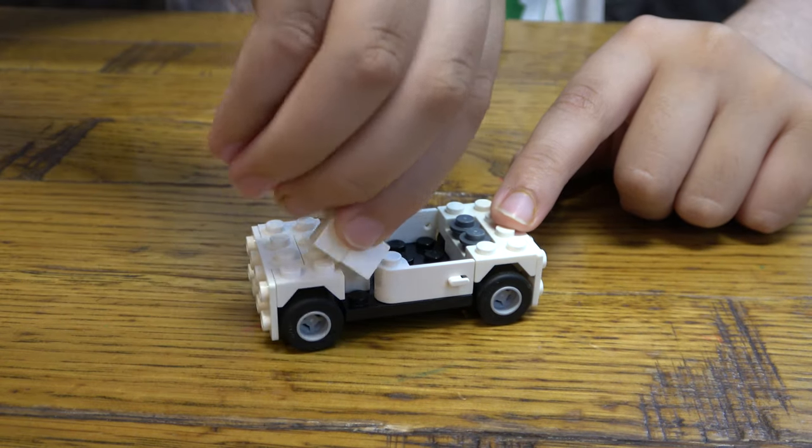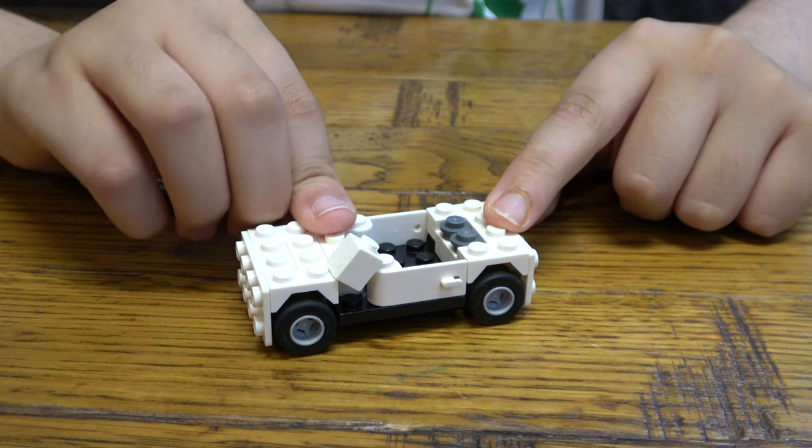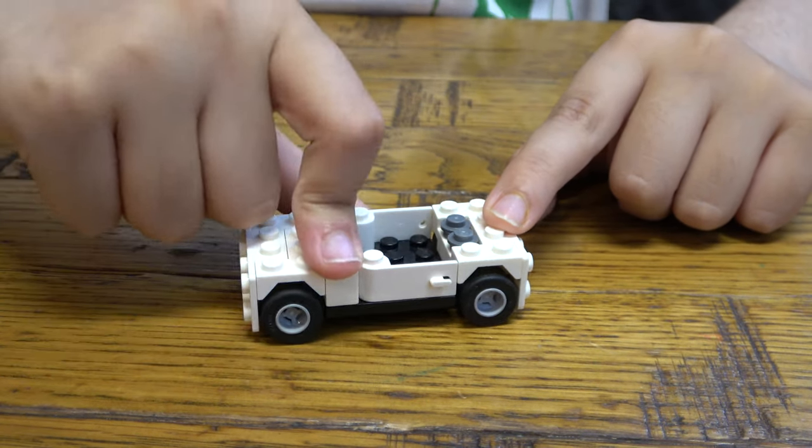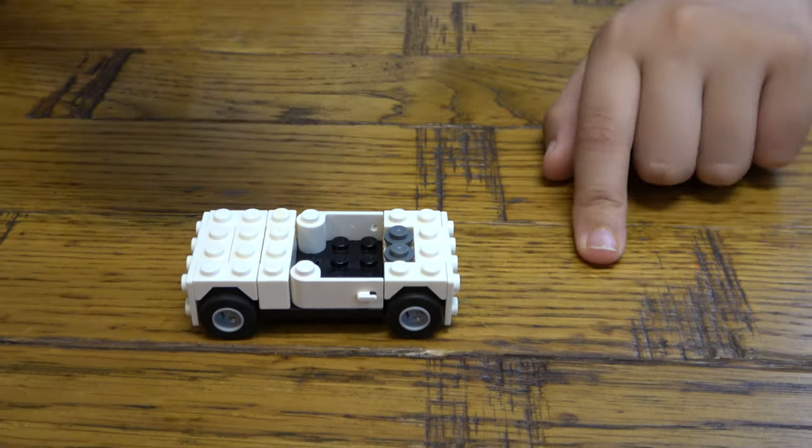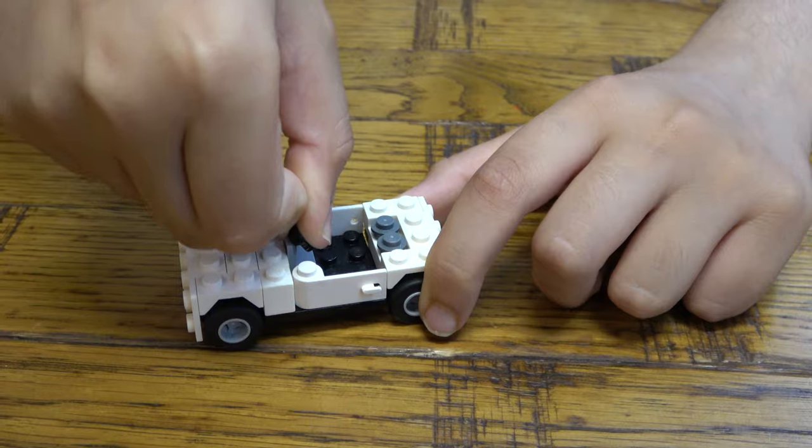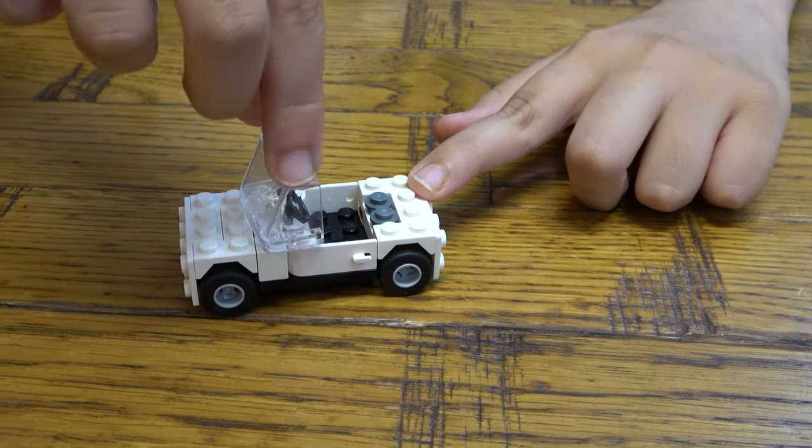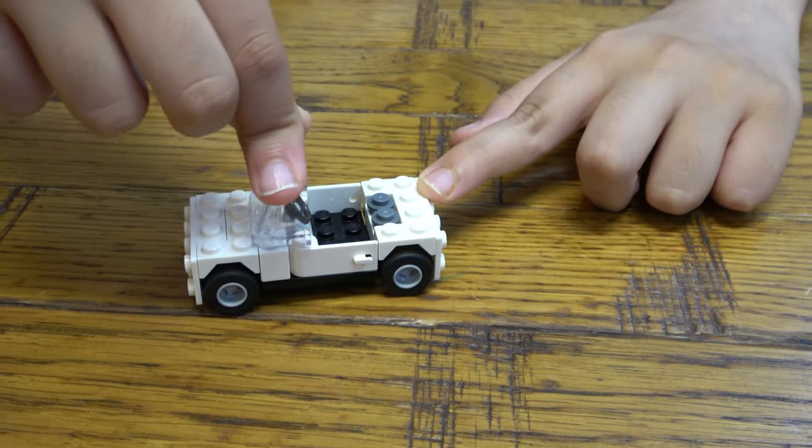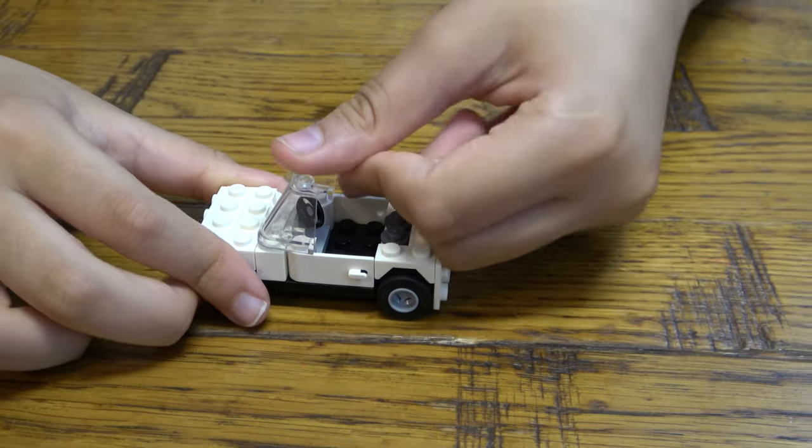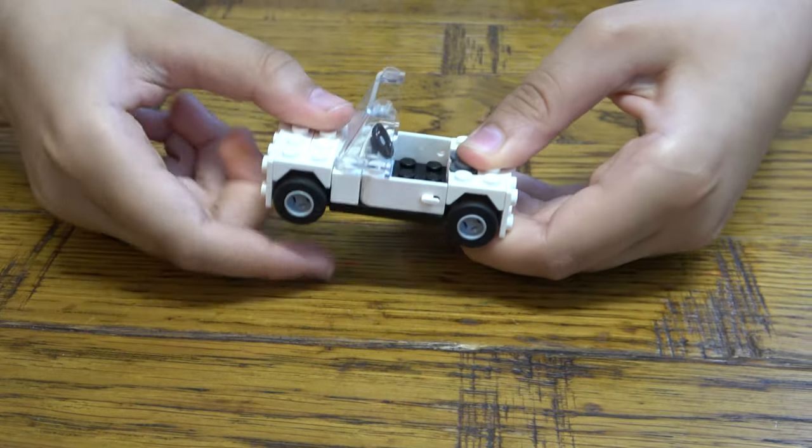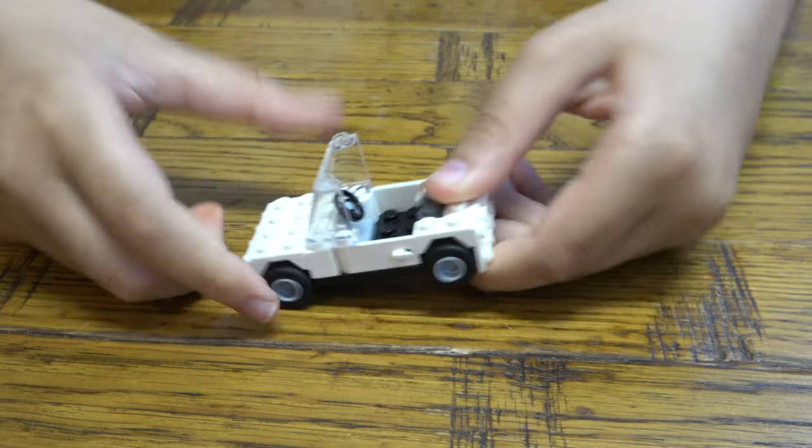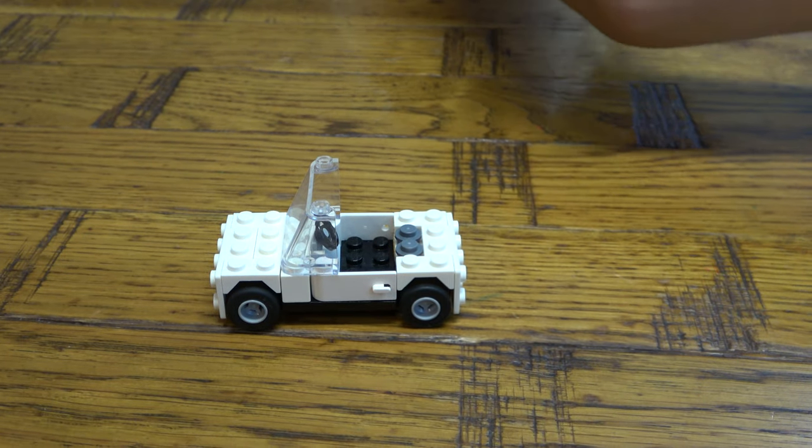And you're going to get two ones. There we go, so that's the base of the car. And also you're going to get this steering wheel on, and then place them on the windshield, like so. There we go.